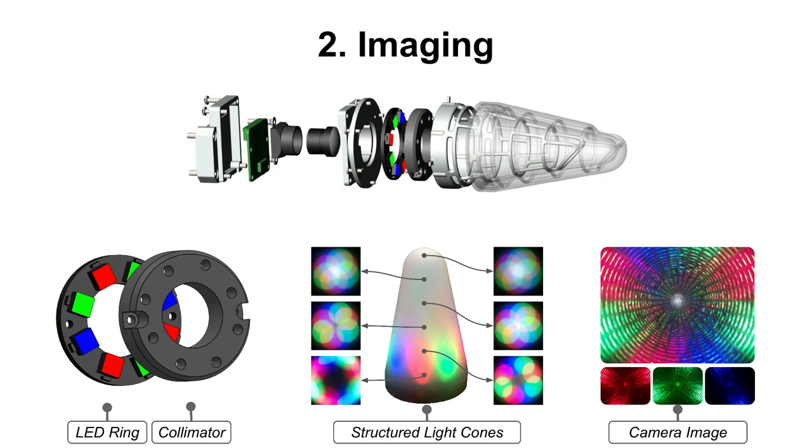We use a masked LED ring to create structured light. Together with shading effects, the camera can detect deformations of the surface from a single image.